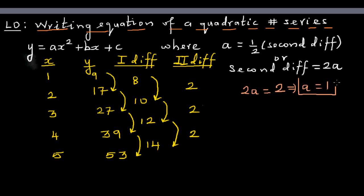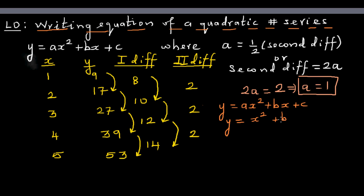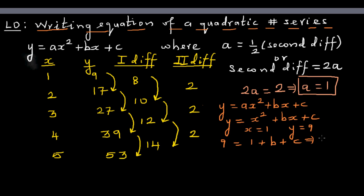Now we write the general formula again: y = ax² + bx + c. Since a = 1, this becomes y = x² + bx + c. We need to find b and c. When x = 1, y = 9, so substituting: 9 = 1² + b(1) + c, which gives 9 = 1 + b + c. Taking away 1 from both sides, our first equation is b + c = 8.